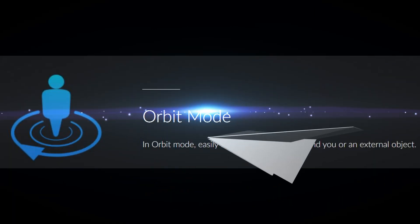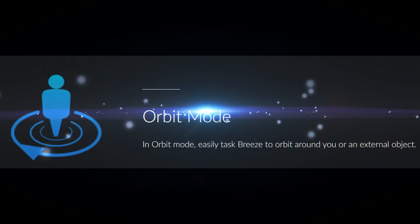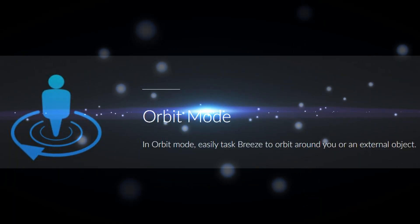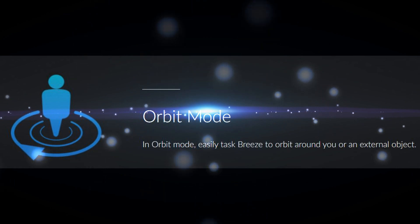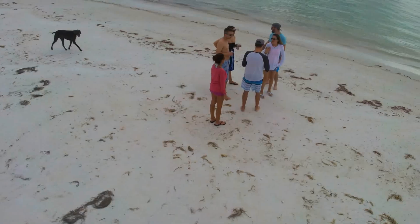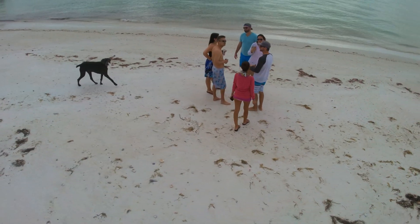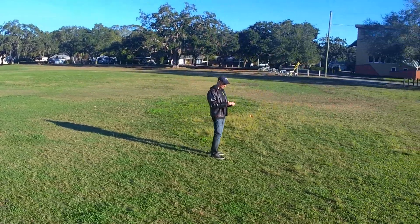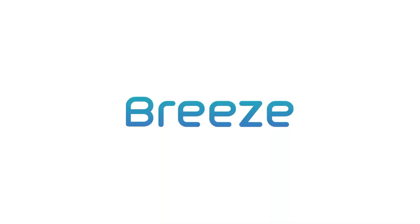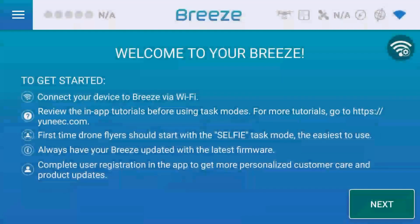Welcome to my tutorial for the Unique Breeze Orbit Mode. Orbit Mode is where the drone will orbit around you or an external object. The Breeze does this in two different ways, and I'm going to explain both in this video.